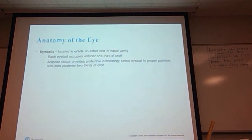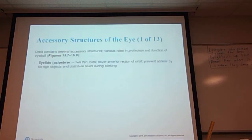There's adipose tissue which provides protective cushioning for the eye and keeps the eyeball in its proper position. That adipose tissue occupies the posterior two-thirds of the orbit. For those of you who dissected the eyeball in lab, you saw there's quite a bit of fat on the back side of the eye.